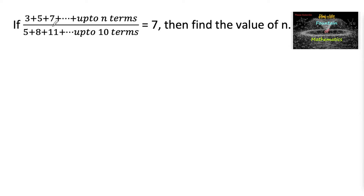If 3 plus 5 plus 7 plus and so on up to n terms, upon 5 plus 8 plus 11 plus and so on up to 10 terms, is equal to 7, then find the value of n.